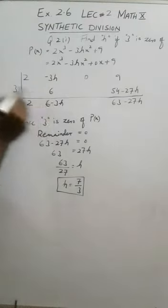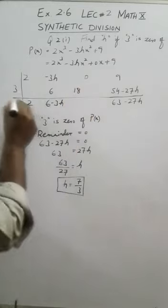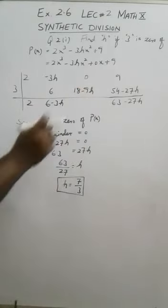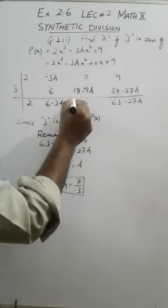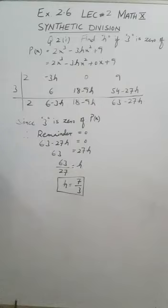Now these two will be multiplied, so 3 into 6 is 18, minus 3 into 3h is 9h. When these are added with 0, they will come as it is: 18 - 9h. Now 3 will be multiplied with this one.